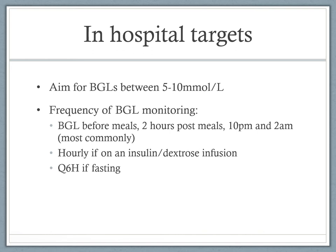In the hospital, we generally aim for blood glucose levels between 5 to 10 millimoles. Frequency of blood glucose monitoring will depend on the patient, but most commonly it will be before meals, two hours post-meals, at 10 p.m. and at 2 a.m. If the patient is on an insulin dextrose infusion, that will be hourly, and if the patient is fasting, Q6 hourly BGLs — but it will always depend on the patient and the situation.